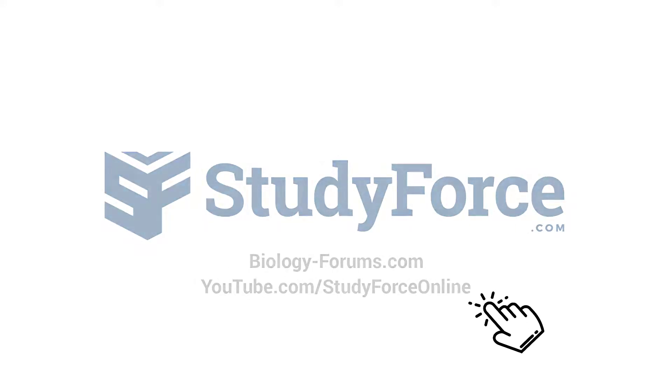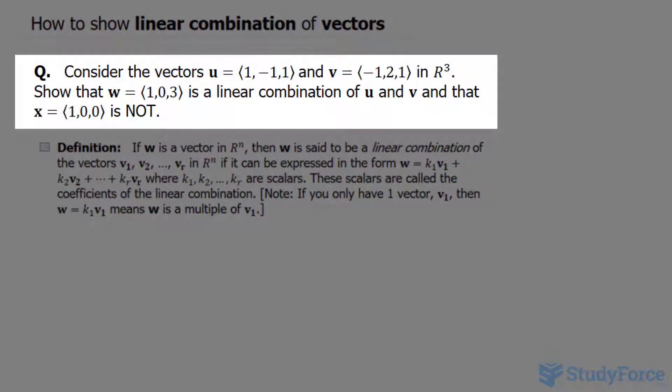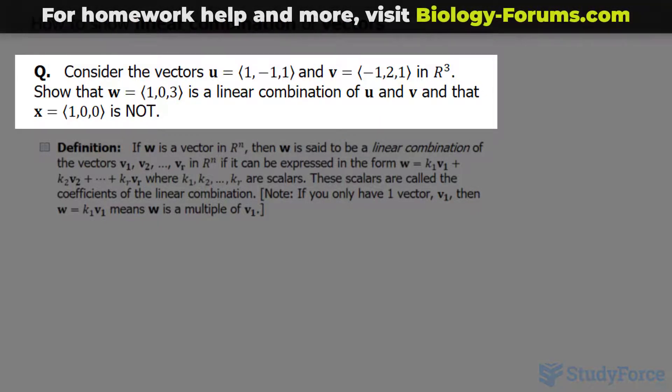In this lesson, we'll be discussing linear combination of vectors. The question reads: consider the vectors u, which has the x, y, and z components shown on your screen, and v in R³. Show that the vector w is a linear combination of u and v, and that x, which has these components, is not.